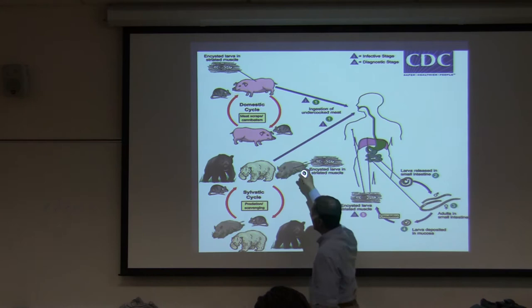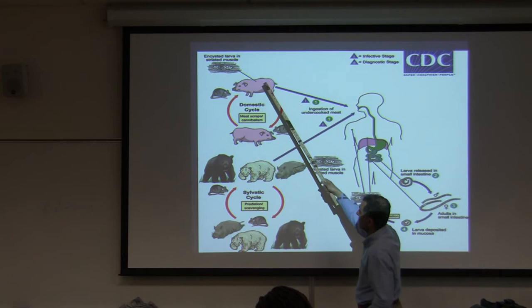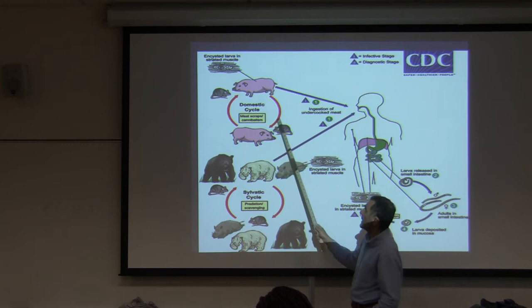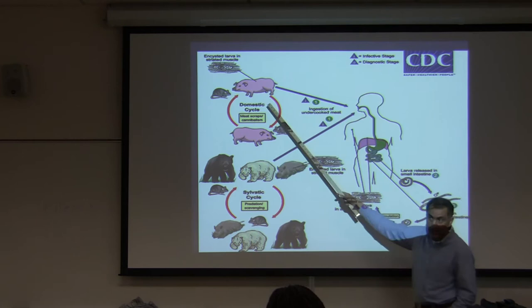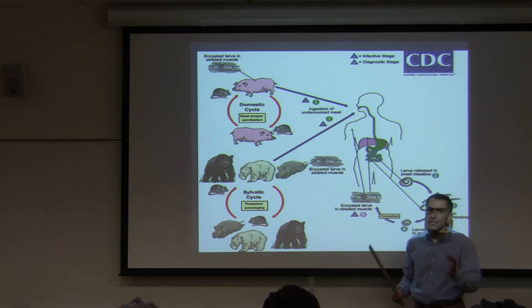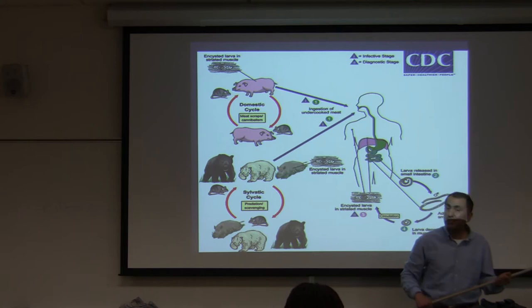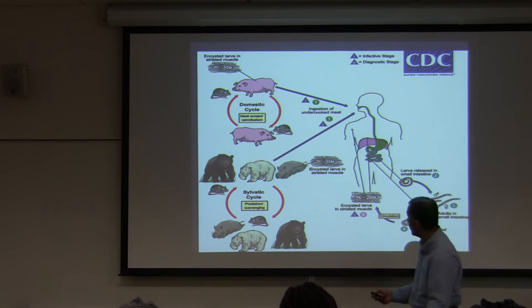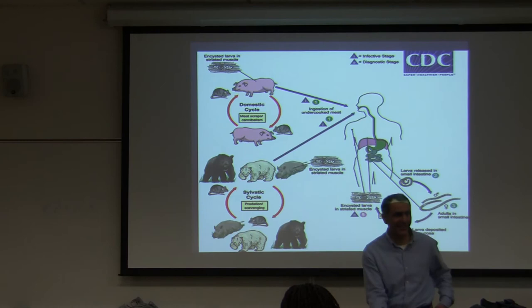Here is the CDC diagram showing the domestic life cycle: pigs on the farm eat rodents, which are all over the farm. If humans eat undercooked pork, they become infected. There are a couple of studies suggesting that cooking does not kill the nurse cell, though most studies say cooking will kill it.